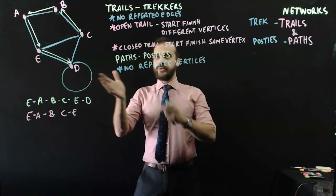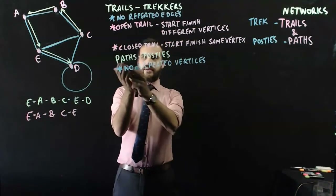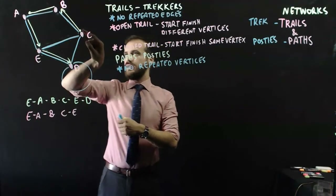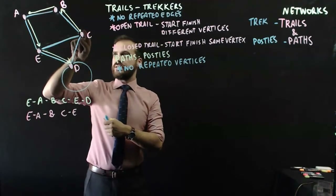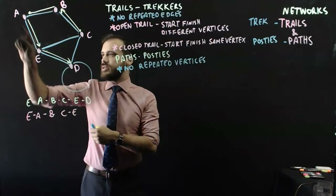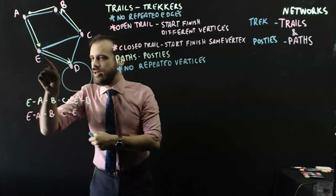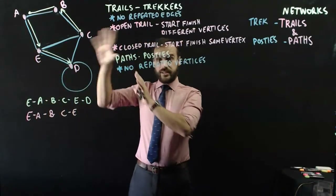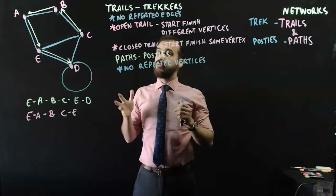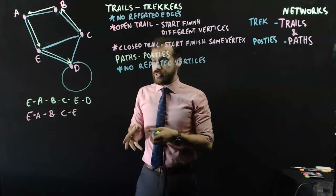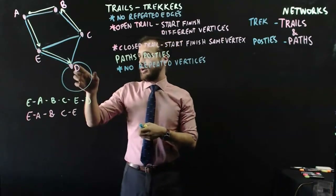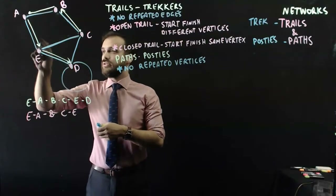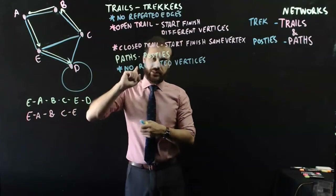Here's an example of a path. We start at C, then go from house C to house B to house A to house E and to house D. This is a path — no repeated vertices. You can see he's only gone to each vertex once.